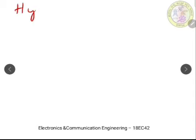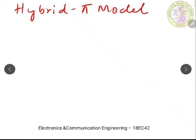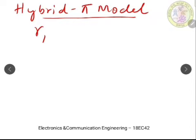Next, we move on to the second topic: the hybrid pi model. The hybrid pi model is just a representation of our amplifier. This model represents the voltage controlled current source, and it includes the input resistance Rpi by looking into the base region. This model also yields IC as well as IB.